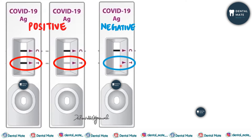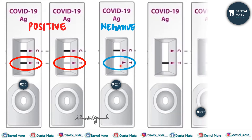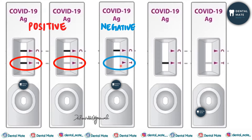If the control line is dark but the test line is absent, the result is negative. If the control line is absent and the test line is dark, this kit would be regarded as invalid. Similarly, if the control line is absent and the test line is faint, the kit is also regarded as invalid.